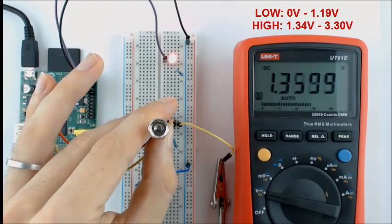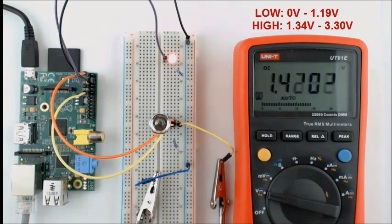So there you have it, very roughly, 0 to 1.2 volts corresponds to a low, and 1.3 to 3.3 volts corresponds to a high.